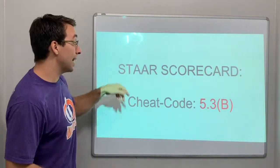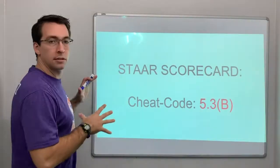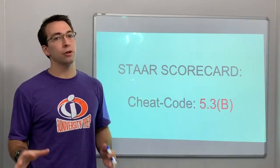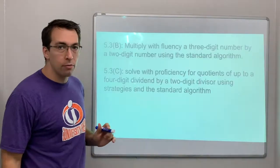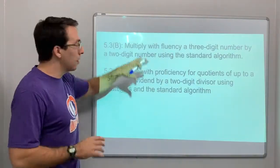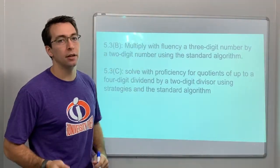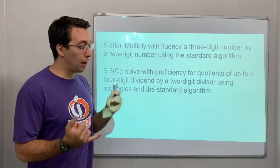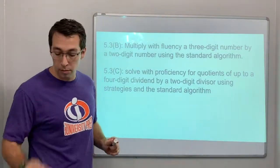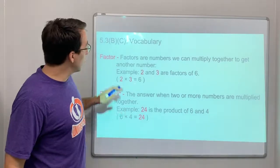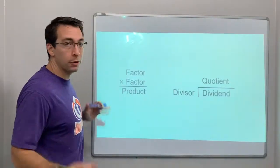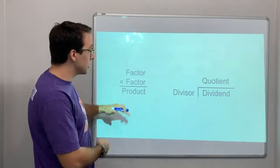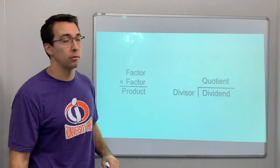Hello again. Today we're coming back to video number two, star scorecard cheat code 5.3B. Remember, B and C are connected — multiplication and division. You have to be comfortable multiplying; you have to know your times tables. For multiplication, factor times factor is the product — the product equals the answer to a multiplication problem.